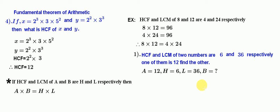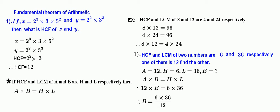We have to find the value of b. We know that a into b equals h into l. Substituting the values: 12 into b equals 6 into 36. Therefore, b equals 6 into 36 divided by 12, which gives b equals 18.